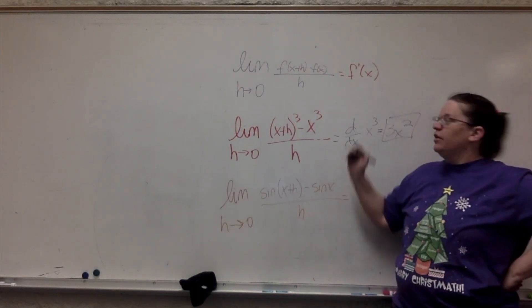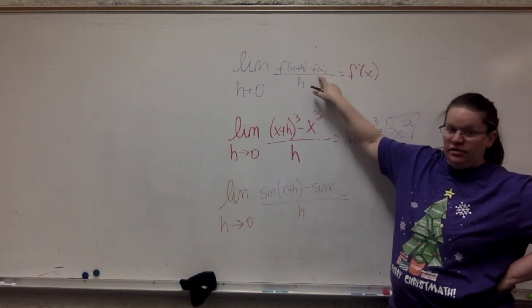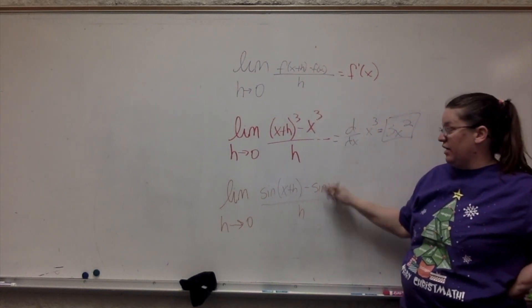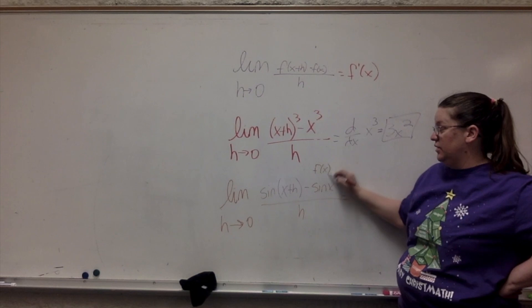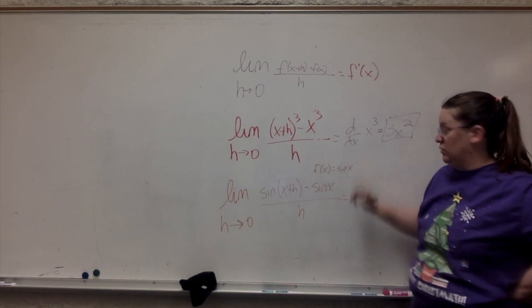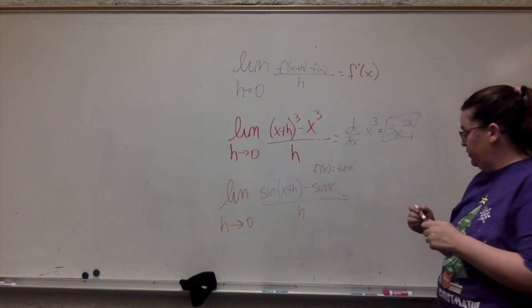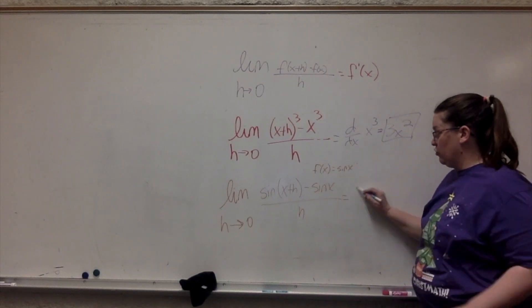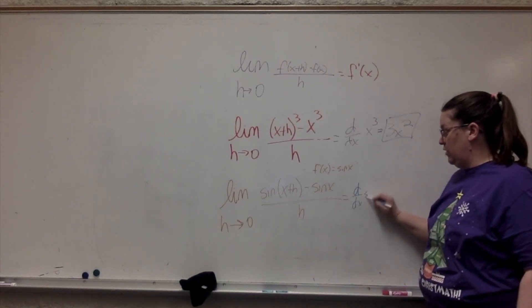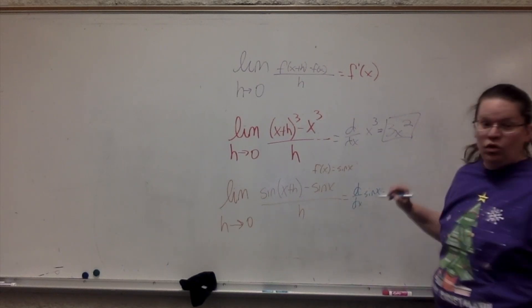So just remember that it's minus f of x. So it's minus sine of x. That means f of x is sine of x. So what you're doing in this problem is the derivative of sine of x, which is cosine x.